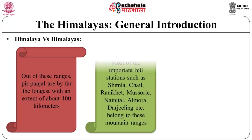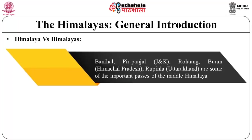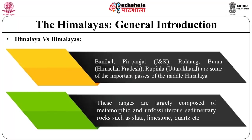Out of these ranges, Pirpanjal is by far the longest at about 400 kilometers. Most important hill stations — Shimla, Chail, Ranikhet, Mussoorie, Nainital, Almora, Darjeeling — belong to these mountain ranges, and most also have important colonial towns. Important passes of the middle Himalayas include Banihal and Pirpanjal in Jammu and Kashmir, Rohtang and Bura in Himachal Pradesh, and Rupina in Uttarakhand. These ranges are largely composed of metamorphic and unfossilized sedimentary rocks such as slate, limestone, and quartz.